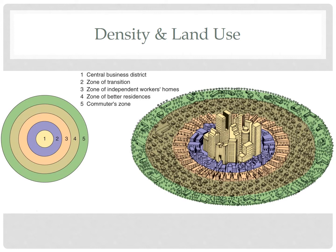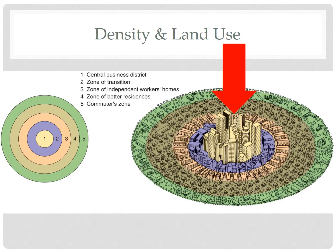Let's use Burgess's concentric zone model to illustrate this point. When we first talked about this, I had you focus on the rings. But this time, I want you to focus on the building types and density. Notice the CBD — this land is most accessible, therefore most valuable, therefore will be used most intensively. So, developers will build very tall buildings, skyscrapers, to maximize the use of that land.